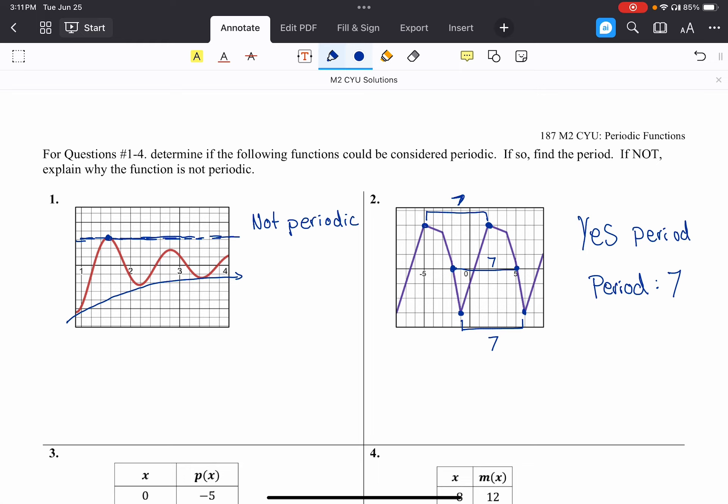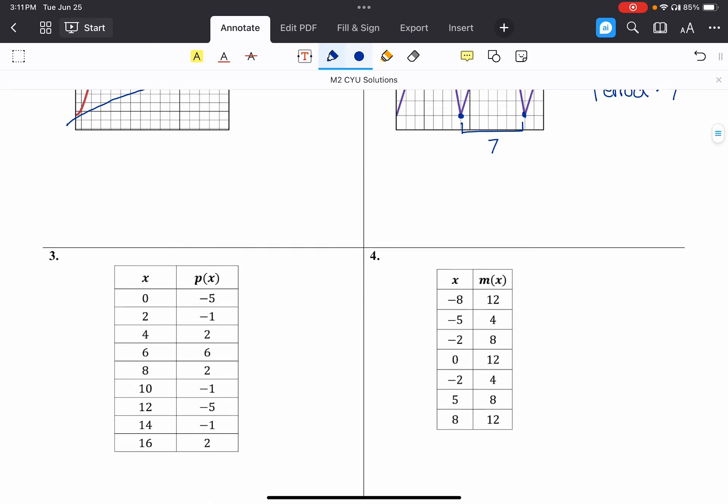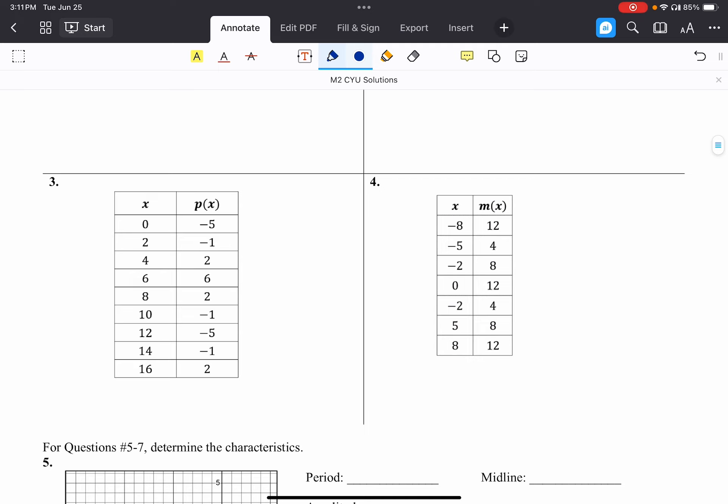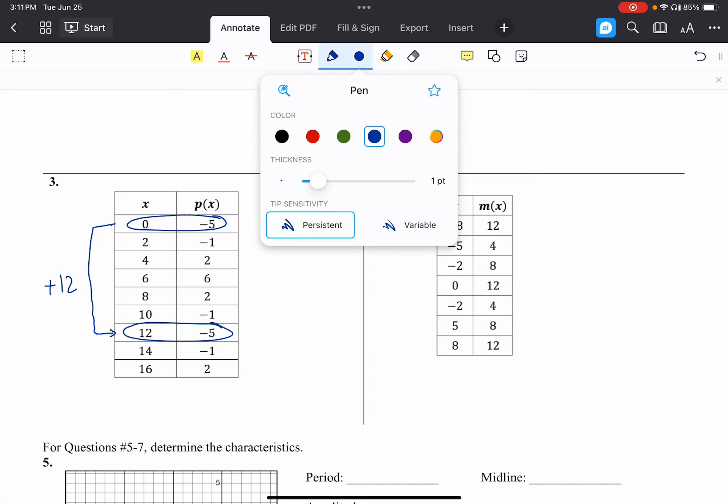So there are two graphs. Let's check out our two tables. So on the first one, I'm looking at my output values and I see repeating patterns. It goes negative five, negative one, two, six, two, negative one, negative five, negative one, two. All right, that looks good. Now I might look, okay, so I have this negative five and I got a negative five down here, and I notice those are 12 units apart.